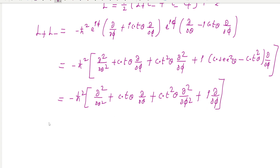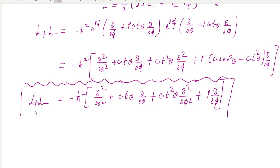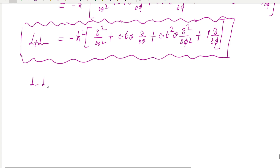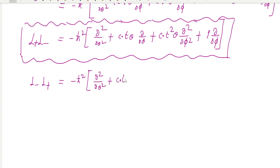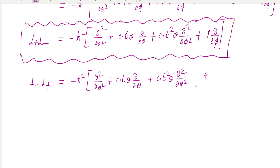Similarly, solving for L minus L plus gives minus h-bar squared times d squared by d theta squared, plus cot theta times d/dtheta, plus cot squared theta times d squared by d phi squared, minus i times d/dphi.